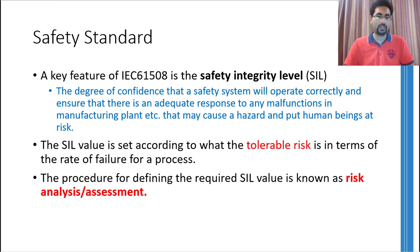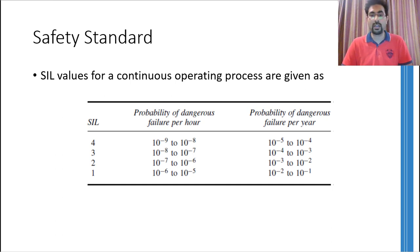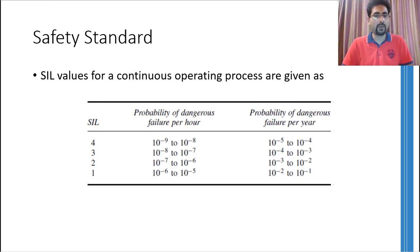This standard also defines the risk assessment procedure to figure out the SIL value. For continuous operations, a SIL value of 4 means the system is most reliable. You can assign SIL 4 if the probability of dangerous failures per hour is in the range of 10⁻⁹ to 10⁻⁸, or in terms of failures per year, in the range of 10⁻⁵ to 10⁻⁴. If the probability of dangerous failure has a higher value, a lower SIL value is assigned. A SIL value of 1 means a system will show dangerous failure with a probability of 0.01 to 0.1 — meaning if used 100 times in a year, it may fail dangerously 1 to 10 times.